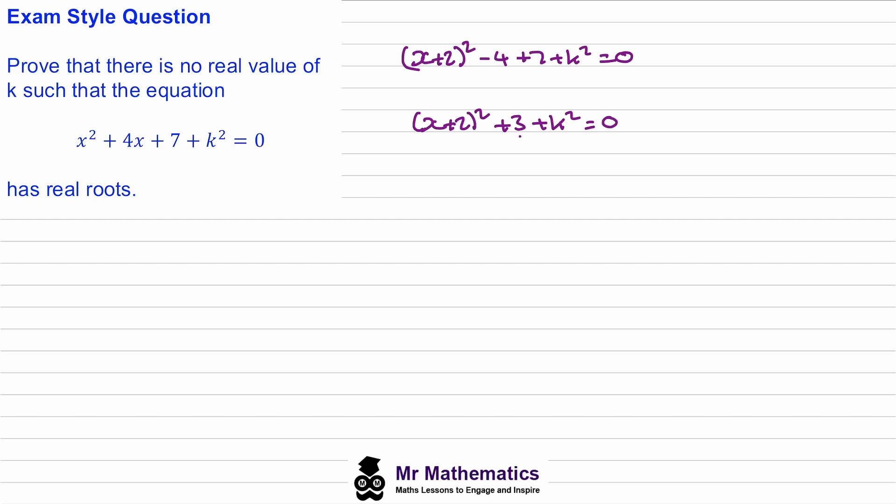Now what we can do is move the positive 3 and the k² to the right hand side, so we get (x + 2)² will equal −3 − k². Then we can factor out the negative on this right hand side so (x + 2)² will be equal to −(3 + k²).